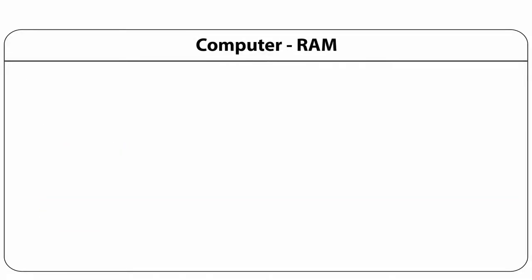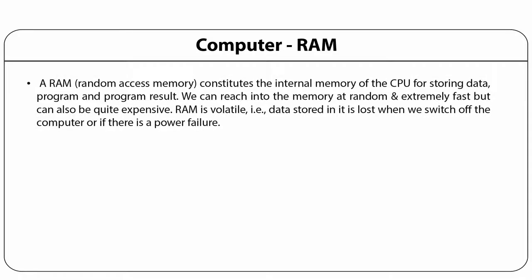Random access memory — RAM — constitutes the internal memory of the CPU for storing data, programs and results. We can retrieve information from this memory at random and it is extremely fast, but it is expensive. RAM is volatile and data stored is lost when we switch off the system or if there is a power failure. There are two types of RAM: static RAM or SRAM and dynamic RAM or DRAM.